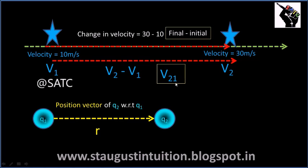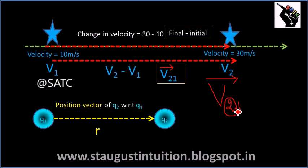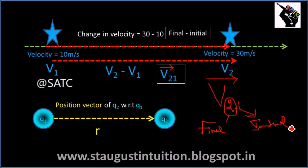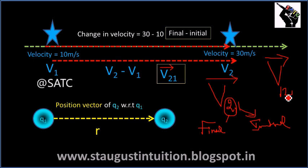Suppose the velocity at the initial position is V1 and at the final position is V2, then the change in velocity is V2 minus V1, and we represent it as V21. V21 is a velocity vector. So the first number is the final and the second number is the initial — that's the notation. So this is represented as V21, or the reverse would be V12.